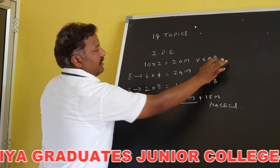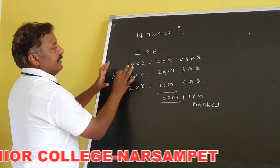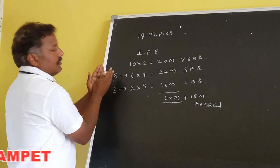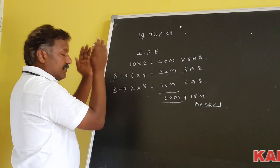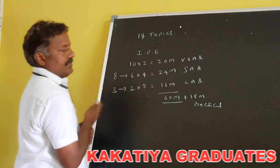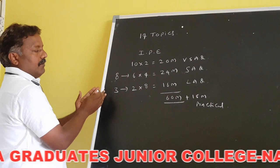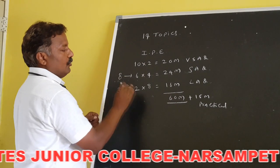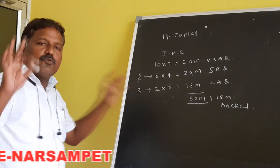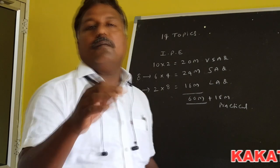Very short answer questions are very important because there is no choice — 10 × 2 = 20 marks. For short answer questions, six out of eight are attempted, and for long answer questions, two out of three: 2 × 8 = 16 marks. Physics is important because it decides your rank in all competitive examinations.